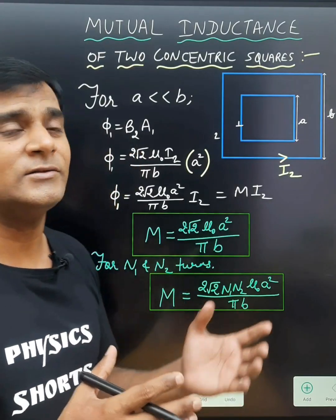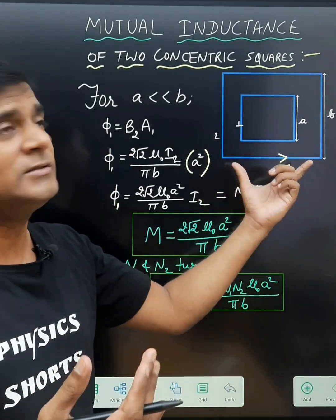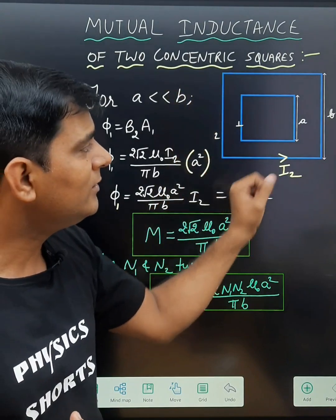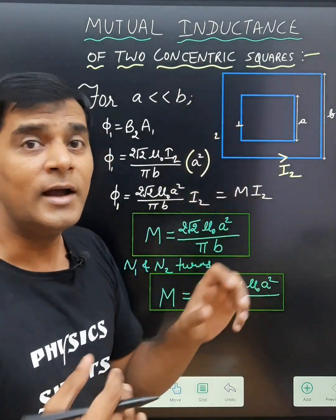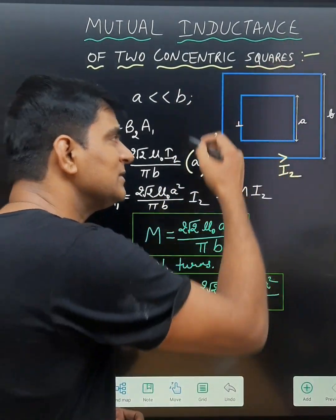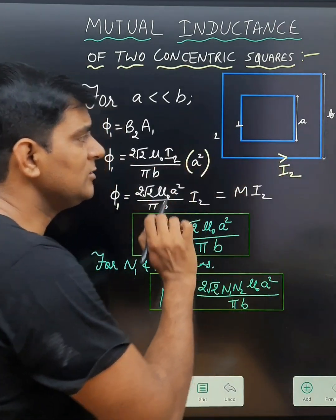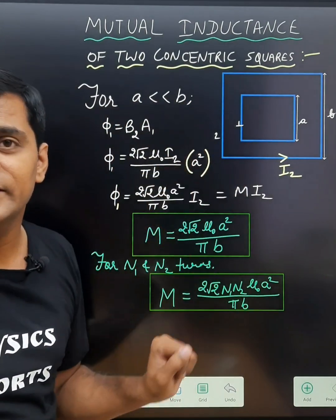Let us find the mutual inductance of two concentrically placed square coils having sides A and B. Let I2 be the current flowing through the second square. In this situation we assume that A is very much less than B.